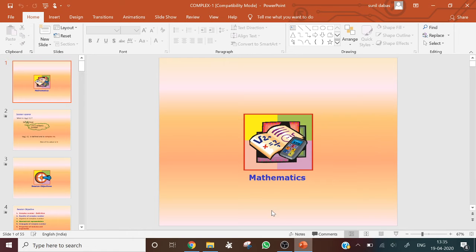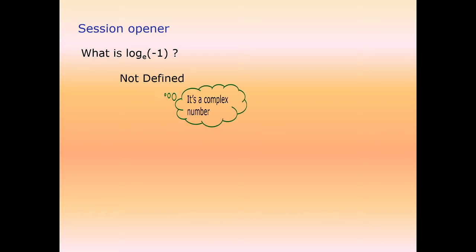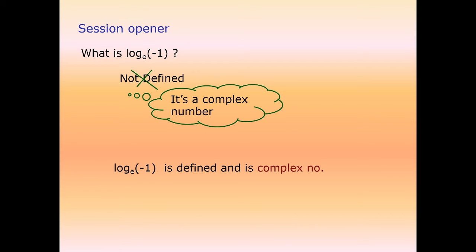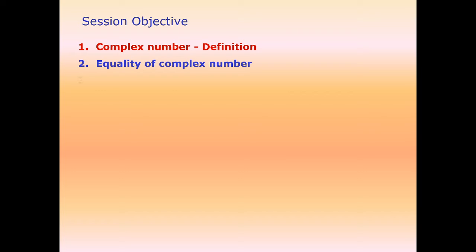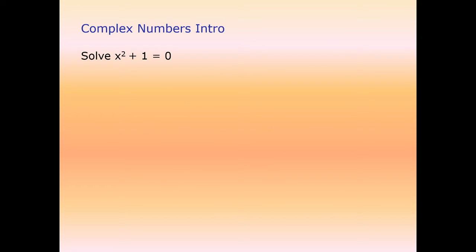In this session on complex numbers, we will discuss: definition, equality, algebra, geometrical representation, conjugate of a complex number, properties of modulus and argument, and equations involving variables and locus. To motivate this, consider log base e of minus 1 — since the domain of log is non-negative (positive) numbers, this is not defined in the reals; it is a complex number, and one of its values is iota times pi.